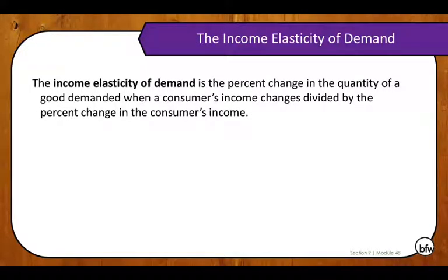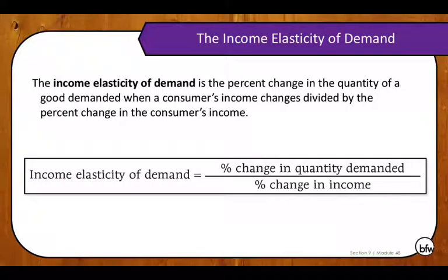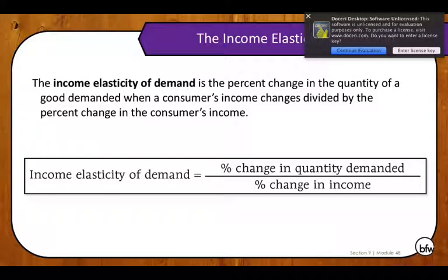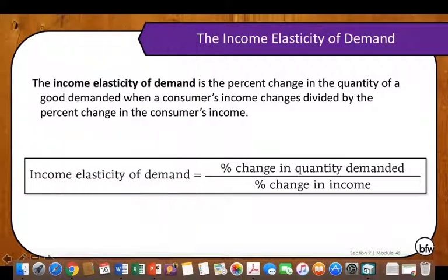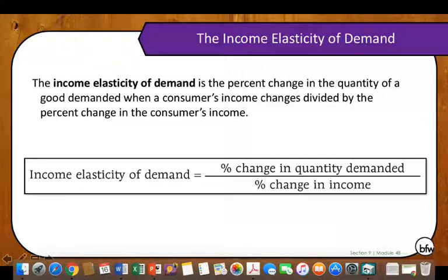The next type of elasticity is the income elasticity of demand — the percent change in the quantity of a good demanded when a consumer's income changes, divided by the percent change in the consumer's income. It is measured by the percent change in quantity demanded divided by the percent change in income, rather than by the percent change in price. Remember that the demand for a good shifts when the income of the consumer changes, and this elasticity measures by how much that demand changes.